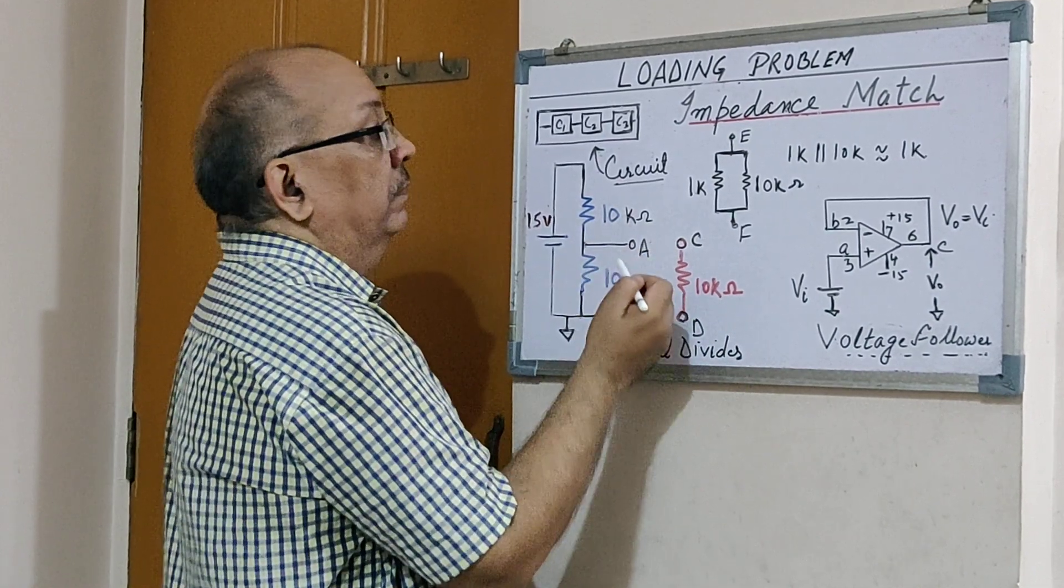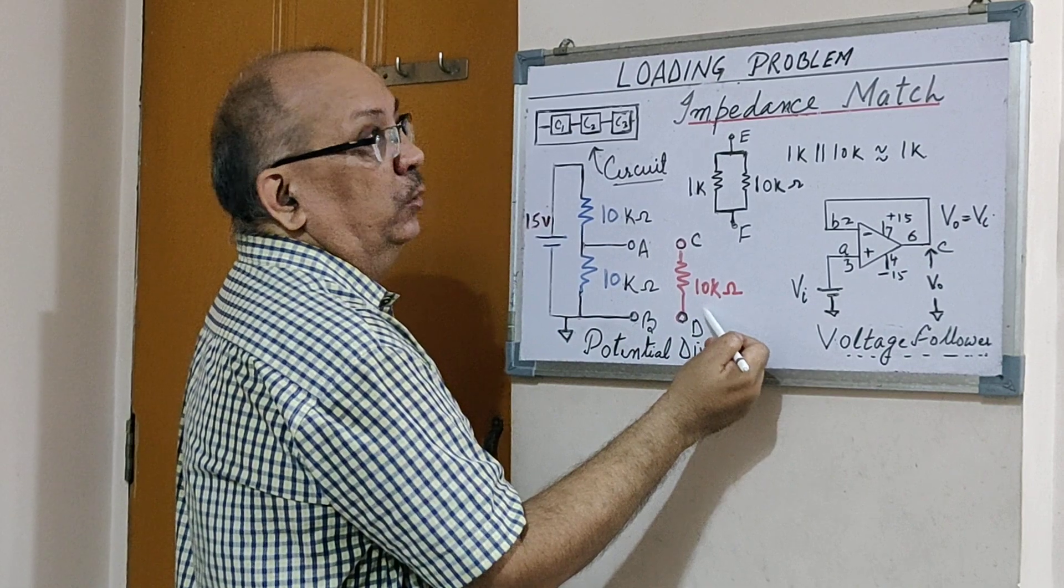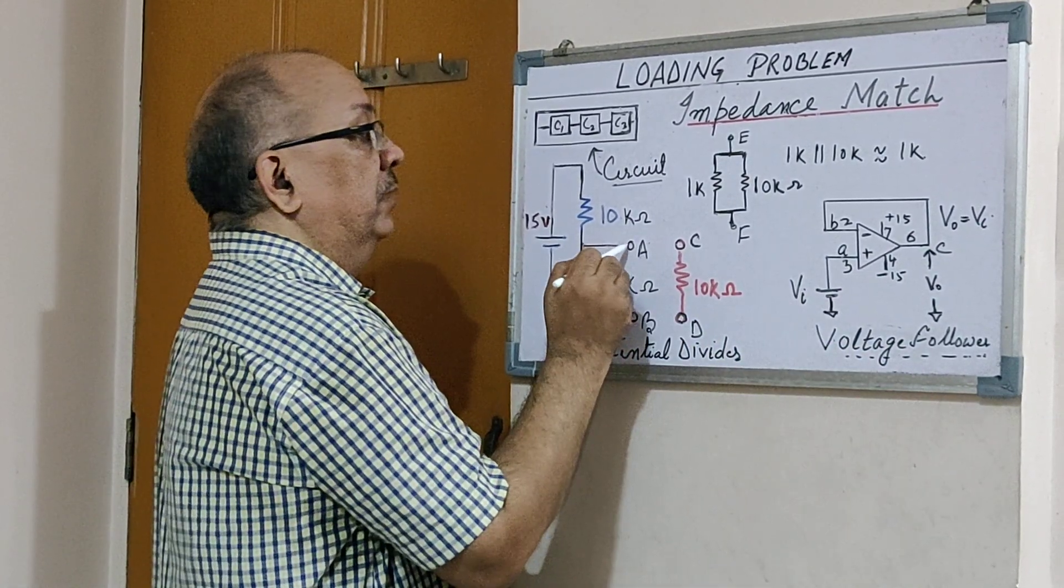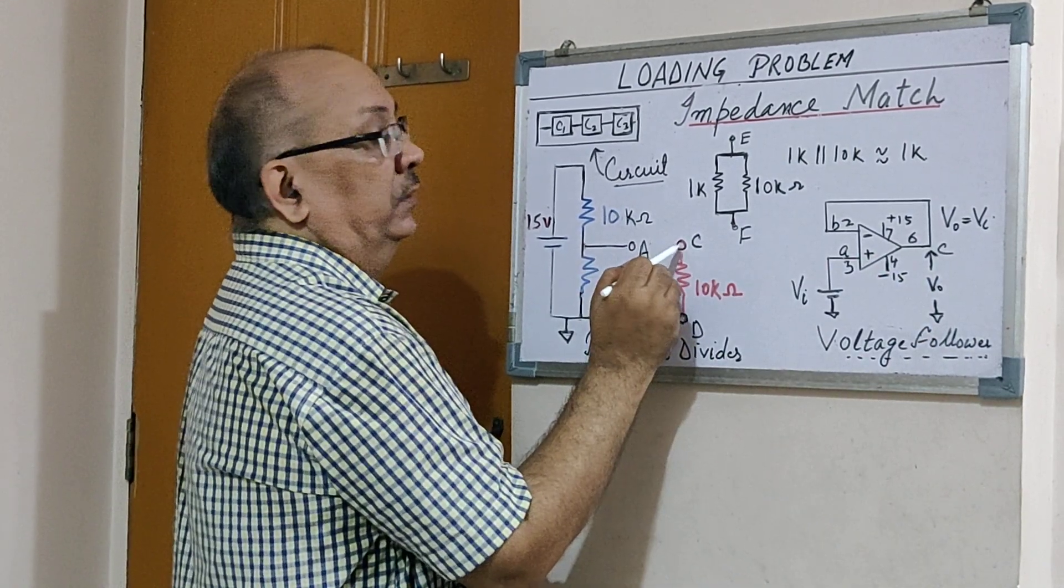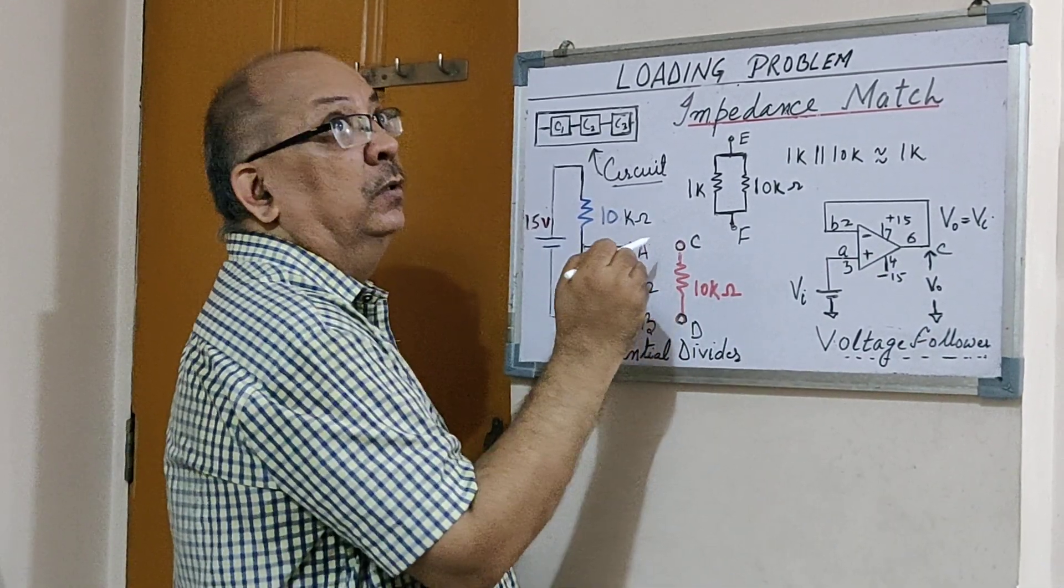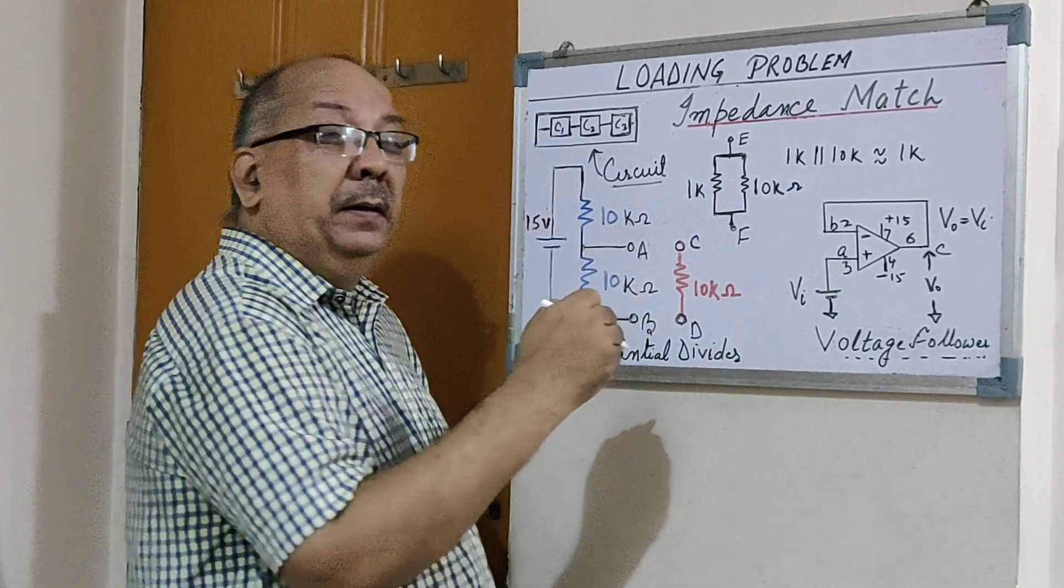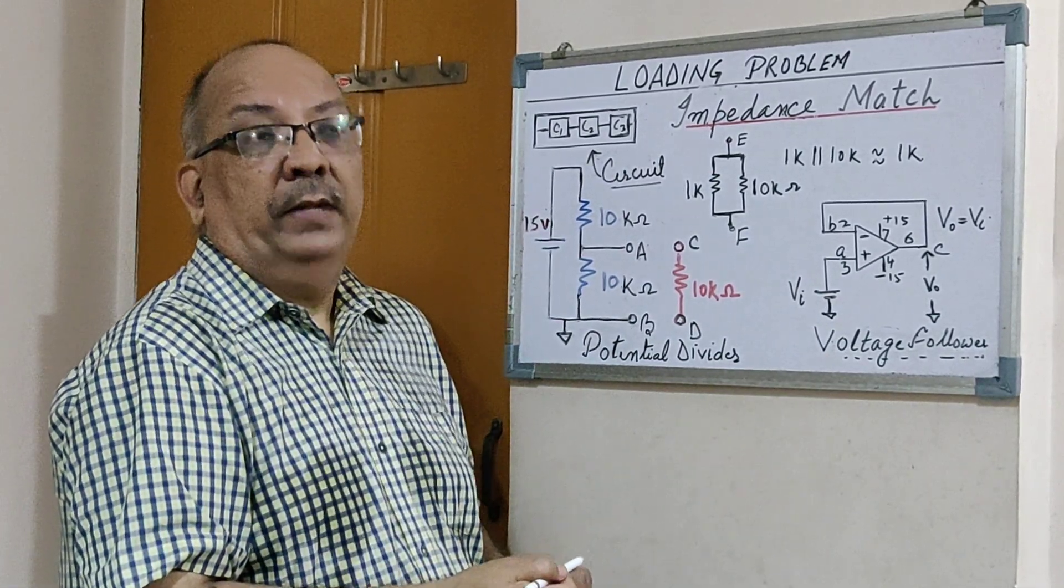C, then without changing these two resistances and without changing the load, whatever voltage will be given to the input of the op-amp, which is connected at A, will be received at this point C. So the loading problem is solved. That means impedance is being matched, and impedance mismatch will be removed. Thank you.